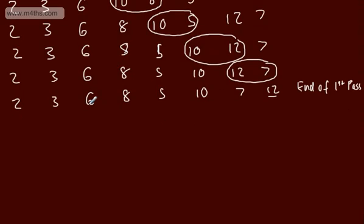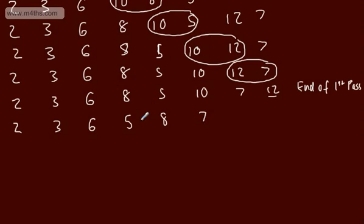We now consider if the values are in order pass by pass. Is 2 less than 3? Yes. Is 3 before 6? Yes. Is 6 before 8? Yes. Is 8 before 5? No — swap them. Comparing 8 with 10: not swapping. Comparing 10 and 7: 7 is less than 10, so swap. Then 10 and 12. 12 is already locked down. End of second pass. After the second pass, two items are in the correct position.